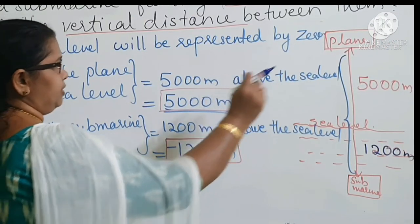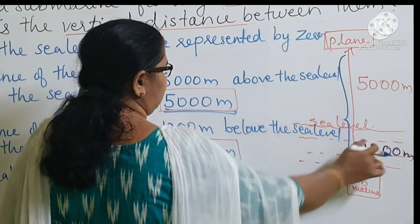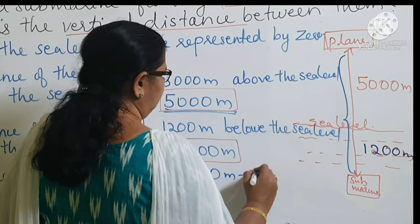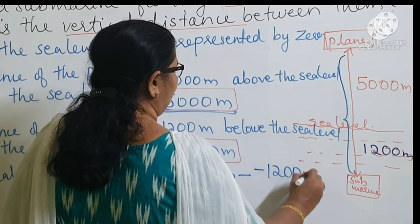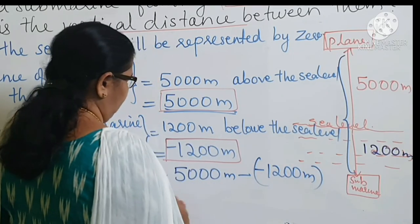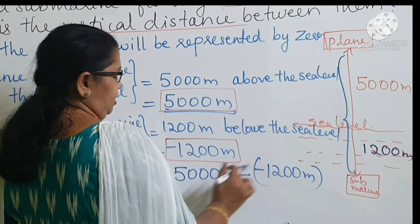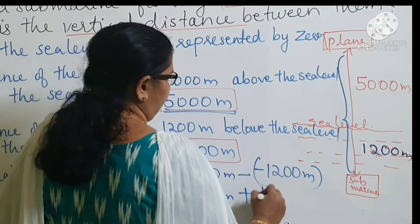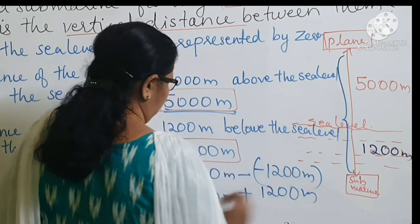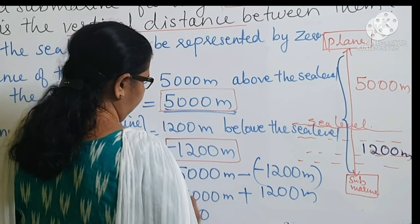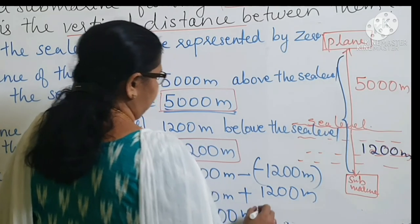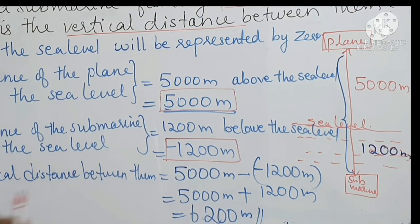The vertical distance between them is 5000 meters minus negative 1200 meters. Applying the additive inverse, that is 5000 plus 1200, which equals 6200 meters. Therefore, the vertical distance between them is 6200 meters.